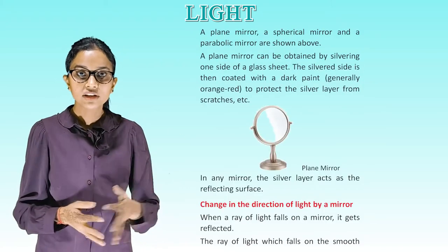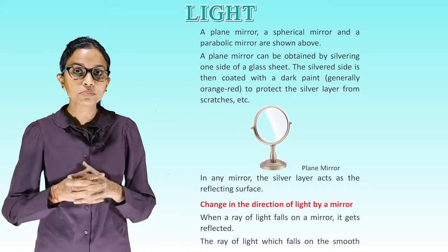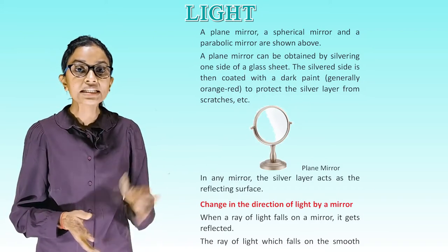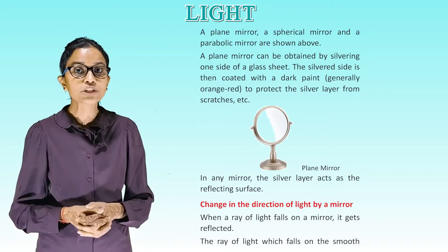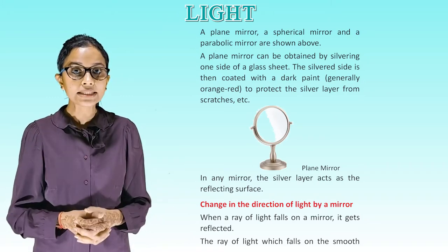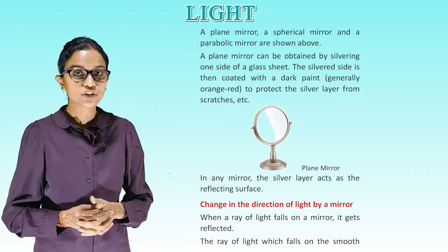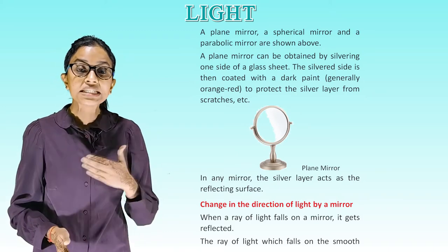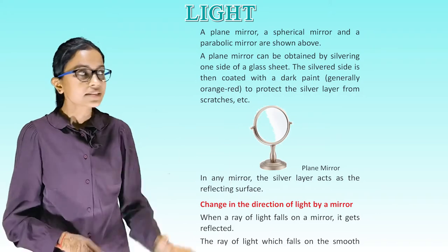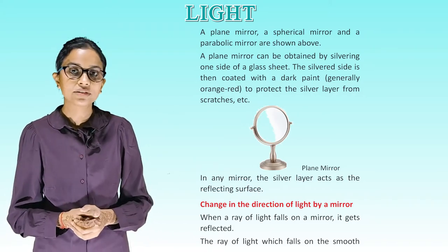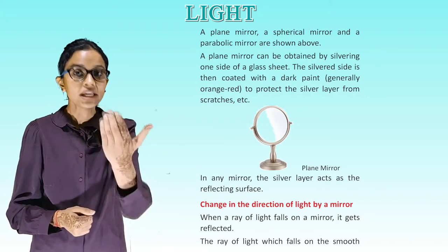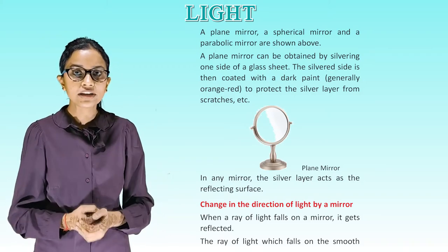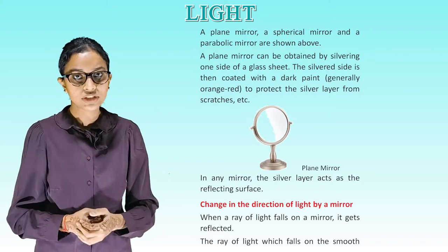A plane mirror, a spherical mirror, and a parabolic mirror are shown. A plane mirror can be obtained by silvering one side of a glass sheet. The silvered side is then coated with a dark paint — generally orange-red — to protect the silver layer from scratches. In any mirror the silver layer acts as a reflecting surface.